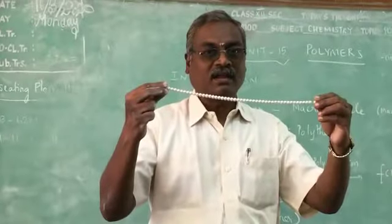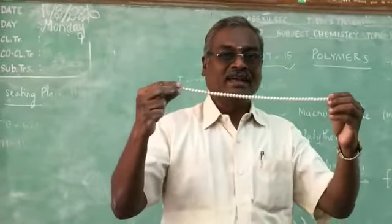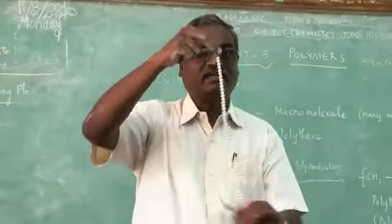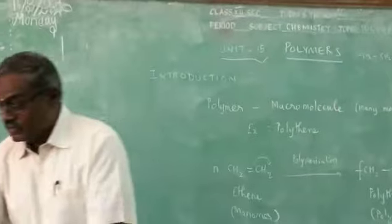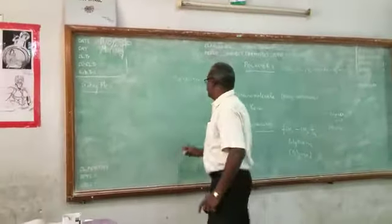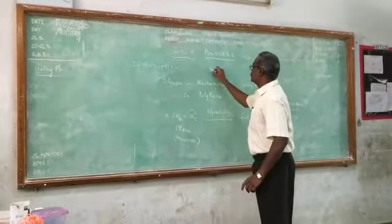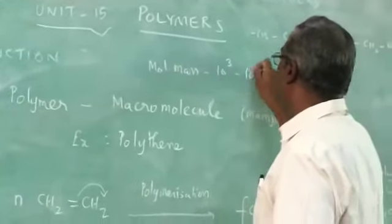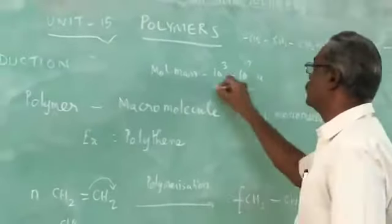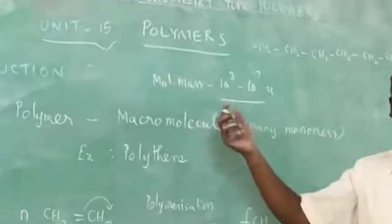Like this a polymer will be there. So many ethene molecules combined in a linear way, in a straight line, and it will form a polymer. So this polymer will have the molecular mass ten to the power of three to ten to the power of seven amu. So high molecular mass.